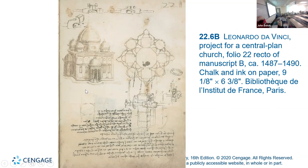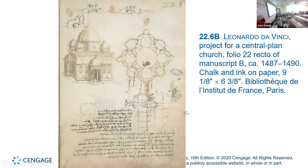He was an architect too. Here is his central plan for a church. When you look at it from the top, you'll see that it is really about geometry and proportions — the idea that a church should fit all the geometric and mathematical principles.